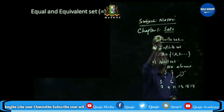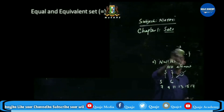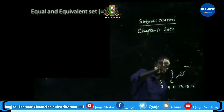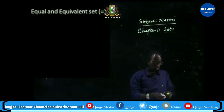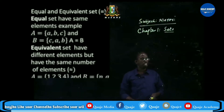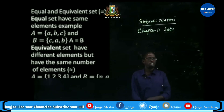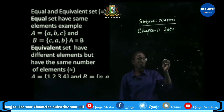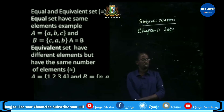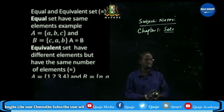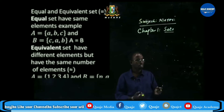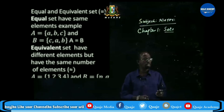Equal and equivalent sets. Equal sets have the same elements. For example, set A = {A, B, C} and set B = {C, A, B} — the order of writing is not important, so they contain the same elements and are equal. Equivalent sets have different elements but the same number of elements. For example, set {1, 2, 3, 4} and set {P, Q, R, S} — they are equivalent because they contain the same number of elements but different elements.